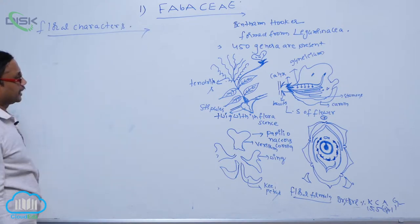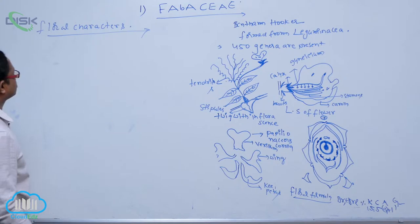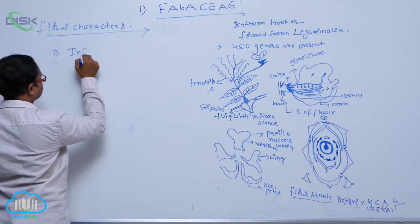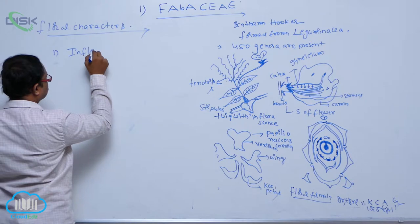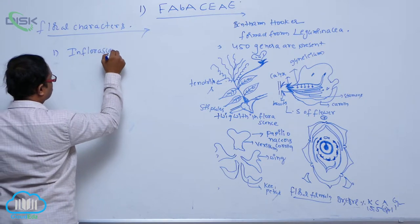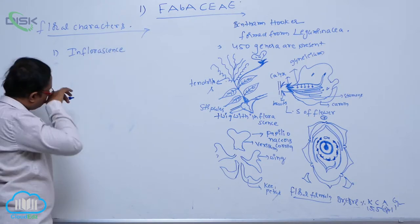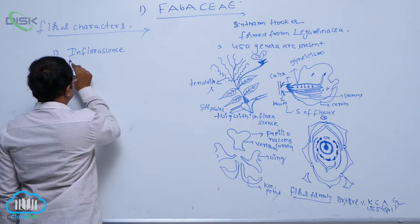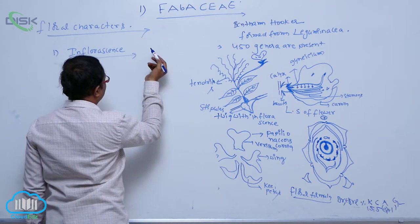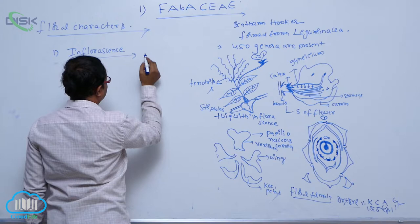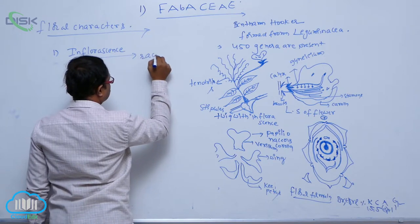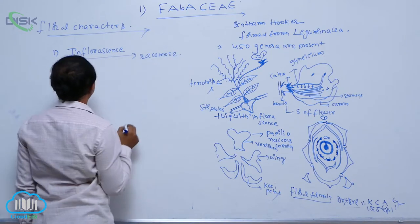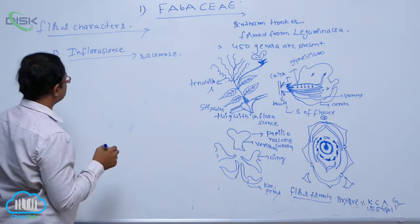In floral characters, the first one indicates inflorescence. In general, almost all flowers in the inflorescence are racemose. Racemose inflorescence is shown here.